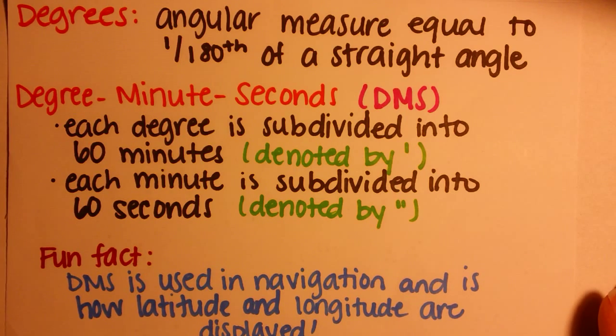Degree minute seconds, or DMS: each degree is subdivided into 60 minutes, denoted by an apostrophe. Each minute is then subdivided into 60 seconds, which is denoted by a quote.